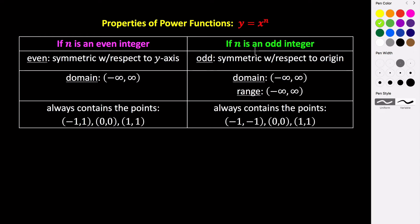So let's take a look at a few examples. So if we're given a function in this form, y equals x to the n power, and n is an even integer, then that tells us that our function is going to be an even function, meaning it's going to have symmetry with respect to the y-axis, just like any other even function that we've dealt with.